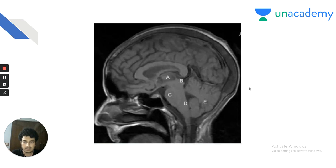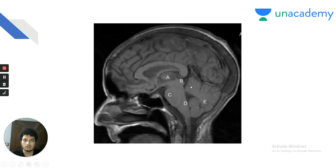Looking at the sagittal section of the brain, you must identify each part. Area A is the thalamus — you can see the corpus callosum and its splenium. Adjacent to the thalamus lies the third ventricle. Area B is the midbrain — this hummingbird appearance is classically seen in midbrain. Area C is the ventral pons.